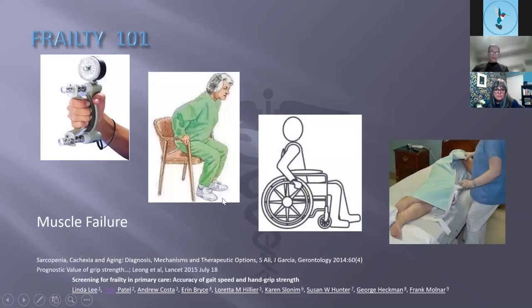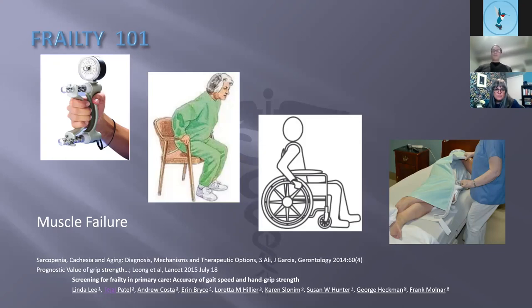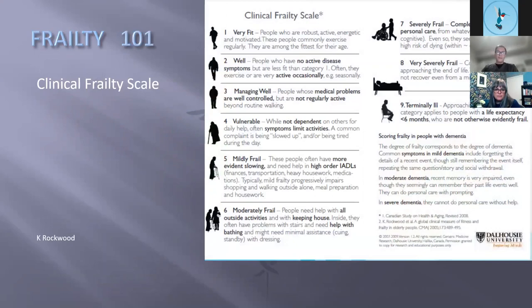Grip and gait is a better predictive model for all-cause mortality than blood pressure — published in The Lancet. In southwestern Ontario, Dr. Linda Lee developed a quick test with an 87% positive predictive value: if you determine somebody is frail, you'll be right about 90% of the time. It measures gait speed, grip strength, and a walk test — both of which can be done in a standard 15-minute office visit.